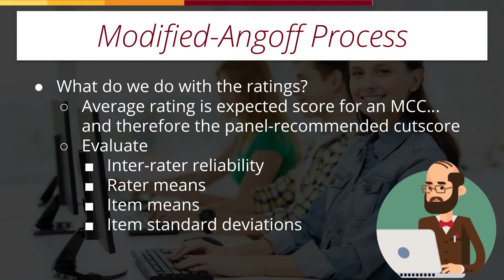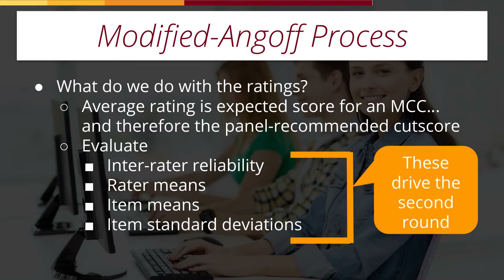If you look at item means, they tell you which items the raters consider more or less difficult. You can also look at item standard deviations, which are useful for determining which items have the most and least amount of agreement. If the standard deviation of ratings for a single item is very high, it means the raters' ratings vary widely and they're not agreeing very much. You might isolate those items for discussion as part of the second round. A key strategic step is not just to look at these statistics by themselves, but to use them to drive the discussions in the second round, because that is going to make your cut score more defensible by increasing the consensus surrounding it.